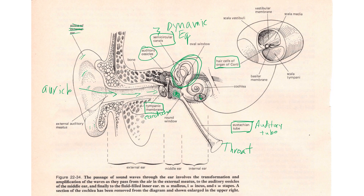On each semicircular canal, a bulb-shaped end is called an ampullaris. The nerve we saw before tracks up to the brain: part of it is the vestibular branch, going to the semicircular canals for balance, and part of it is the cochlear branch, going to the cochlea for hearing. Together, the nerve is called the acoustic nerve — also known as the vestibulocochlear nerve.